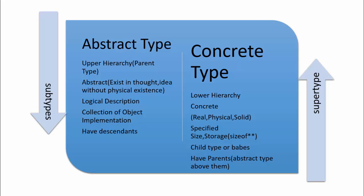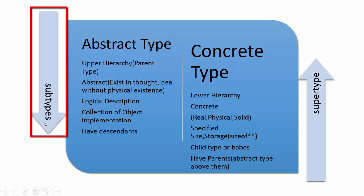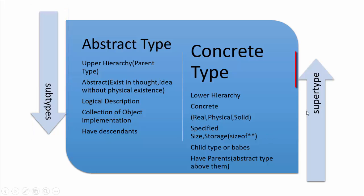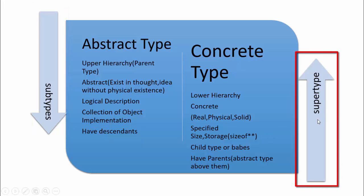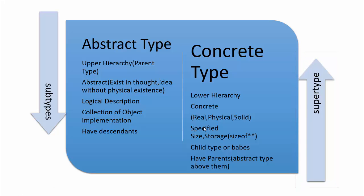To check what is below an abstract type — since abstract types are parent types at the upper hierarchy — you use subtypes() to find the child types. To find the parent type of a concrete type, you use supertype(). The concrete types are like the child types, and abstract types are like the parent or grandparent.